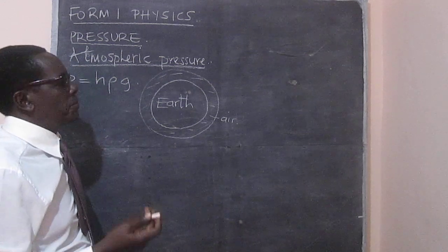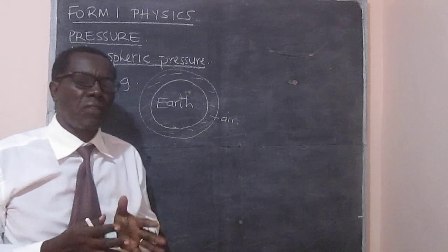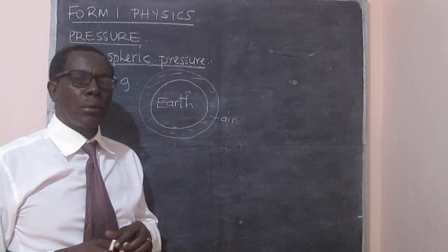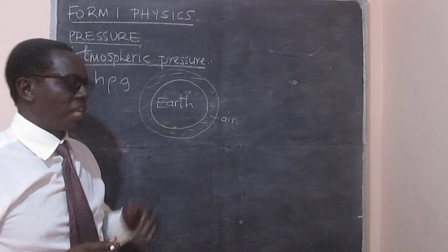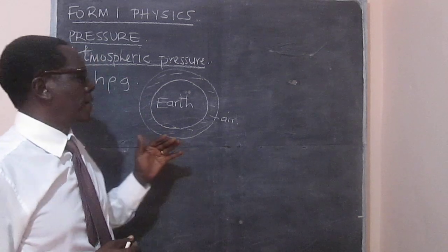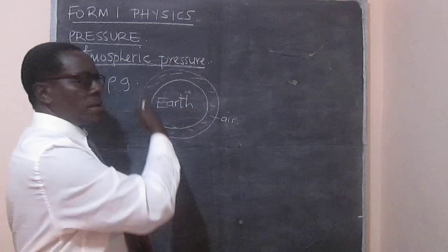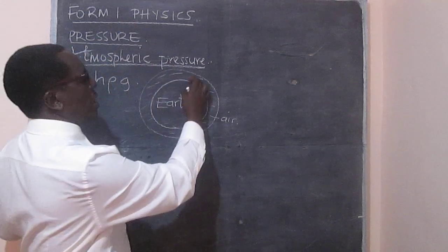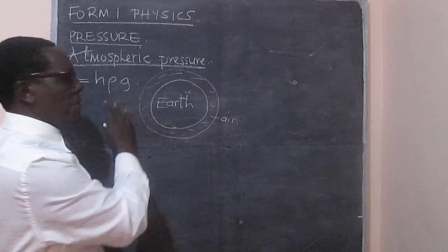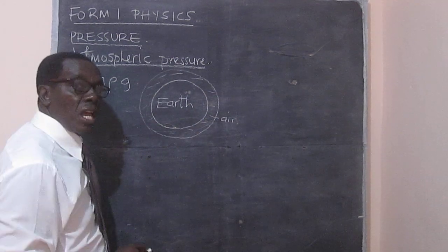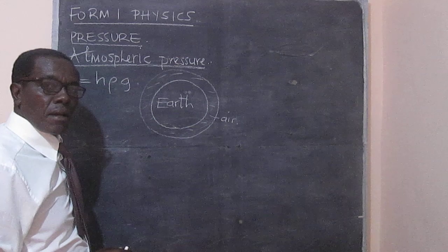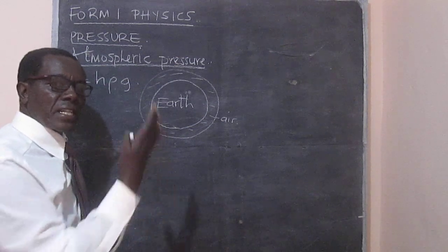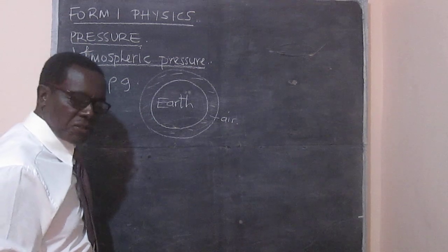It is also worth noting that the atmosphere thins out as we move further from the Earth's surface. That's why there is less oxygen on top of a mountain. At sea level, that's where we have the greatest effect of atmospheric pressure.